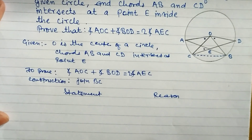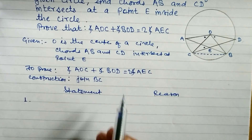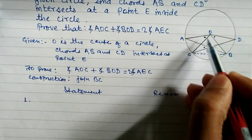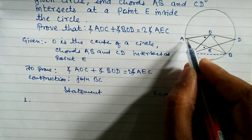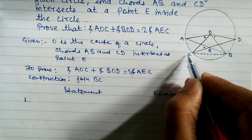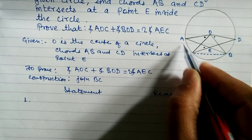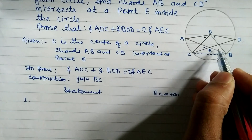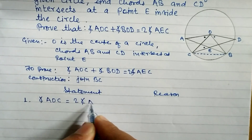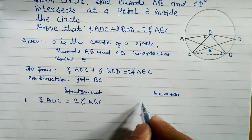In statement one, look at angle AOC — this is a central angle. Angle ABC is an inscribed angle. Both are standing on the same arc AC. Since the central angle is double the inscribed angle, we can write: angle AOC equals two times angle ABC.